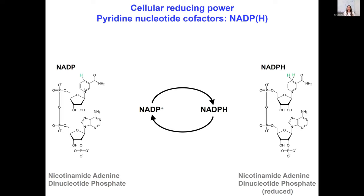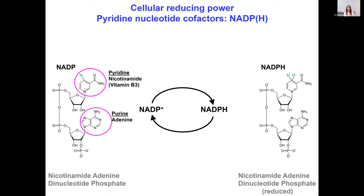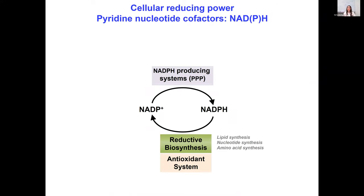Cellular reducing power is stored in the pyridine nucleotide cofactors NADP and NADPH. As their name suggests, these are a class of dinucleotides. They contain two nucleotides in their structure: a pyridine ring, which is your general vitamin B3 or nicotinamide, and a purine or adenine ring — hence the name nicotinamide adenine dinucleotide phosphate. NADP is the oxidized form, while NADPH is the reduced form. NADPH is the major currency of cellular reducing power and is an important factor because it donates electrons to support reductive biosynthesis such as lipid synthesis, nucleotide synthesis, and amino acid synthesis.